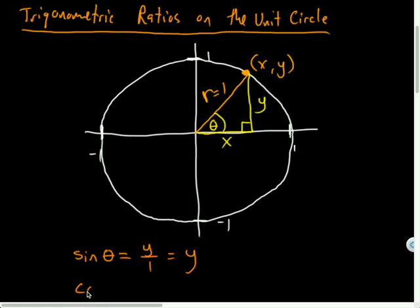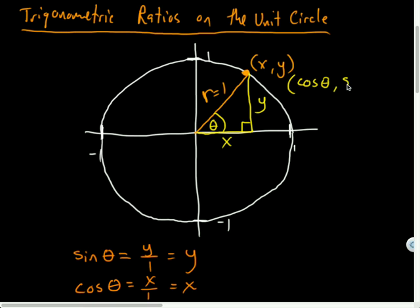And what is cosine of theta equal to? Adjacent over hypotenuse — X over 1, or X. So it turns out the point (x, y) could also be defined as: cosine of theta equals X, and the sine of my angle is always equal to the Y coordinate.